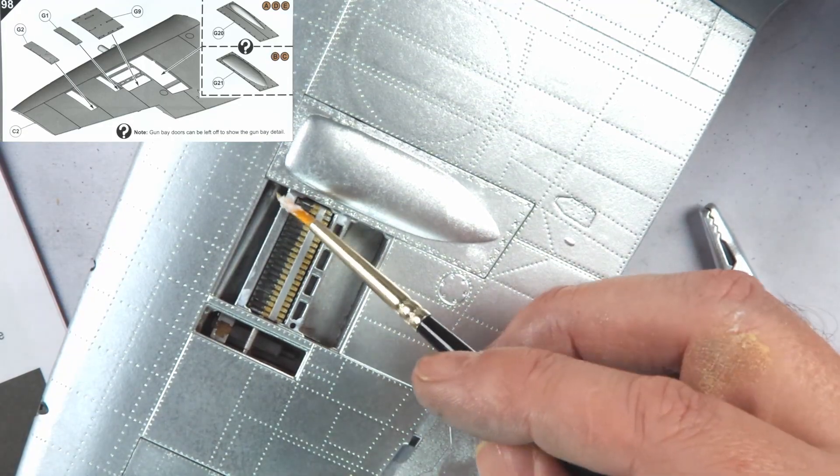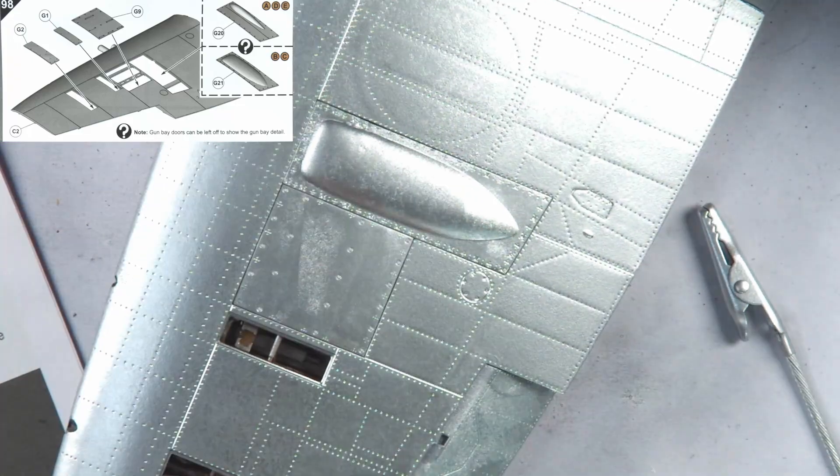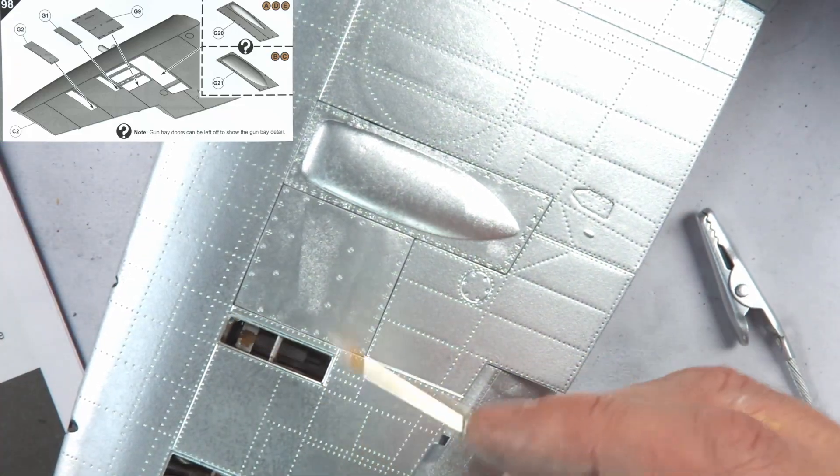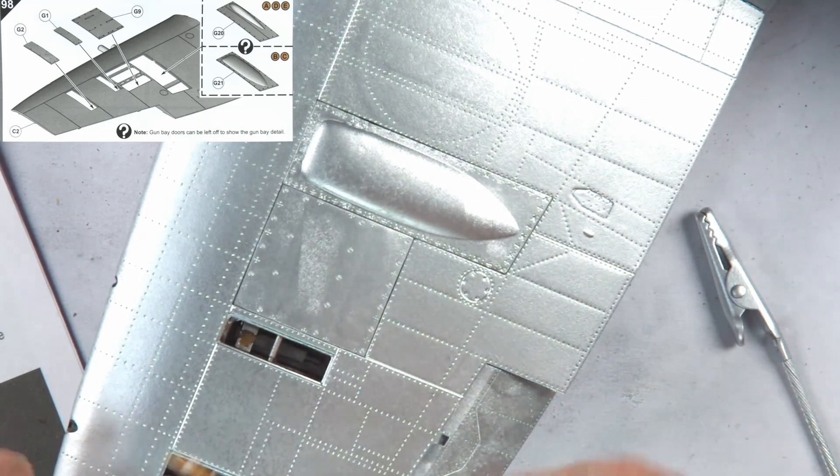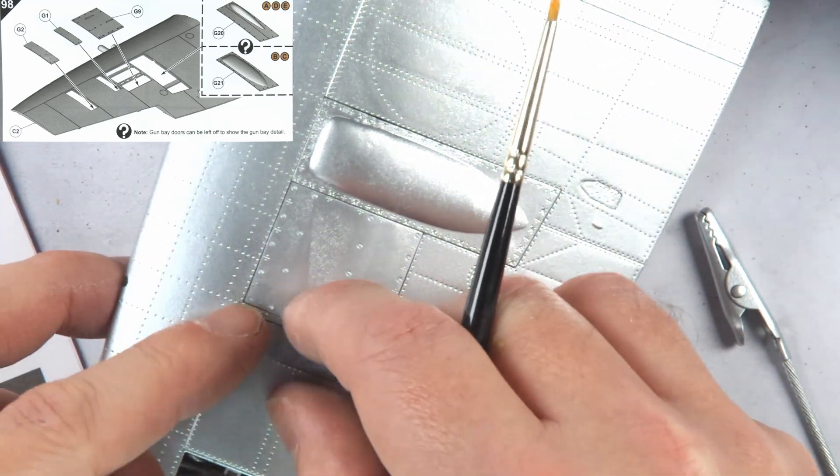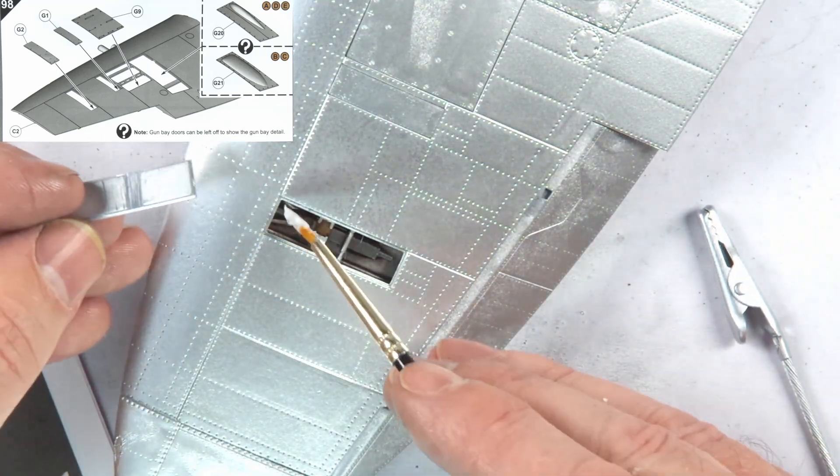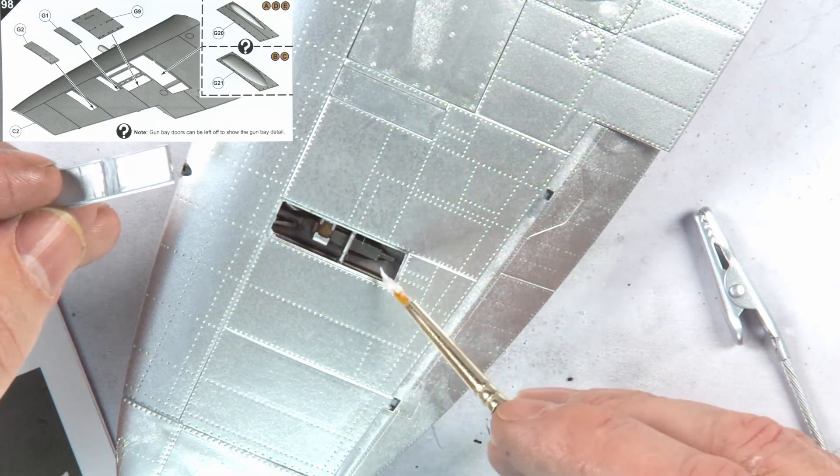Now I was getting close to painting, I went back to step 98 and tacked the wing gun covers in place with PVA glue so I could remove them afterwards. I did find the outer browning panels needed a slot cutting from them for the panels to sit flush, as you can see here.